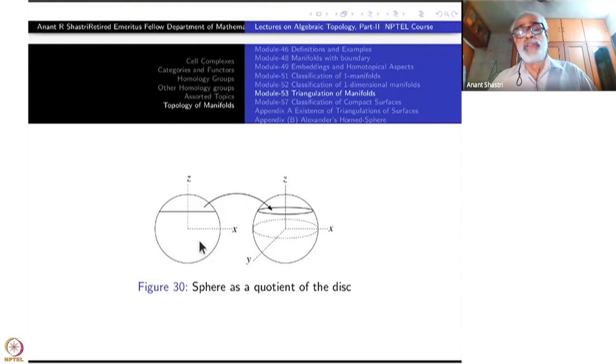So what we get is this quotient, wherein edge from here to here is identified as edge from here to here. It's just the X coordinate going to minus X. It's a linear map.